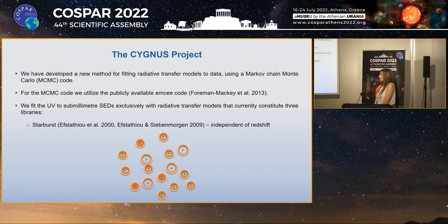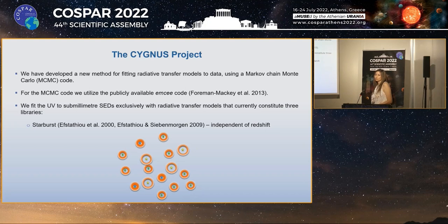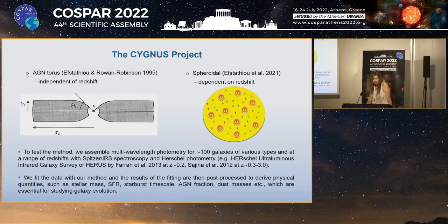Within Cygnus, we have developed a new method for fitting radiative transfer models to data using a Markov Chain Monte Carlo code. The MCMC code we use is emcee, which is a publicly available code developed by Foreman-Mackey et al. in 2013. Some of the main reasons we chose to use emcee are that it is a fast code and it is also easy to parallelize. Our approach is to fit the ultraviolet to sub-millimeter SEDs exclusively with radiative transfer models, and this is one of the novel features of our method. The models currently constitute three libraries: a library of starburst models, a library of AGN torus models, both assumed to be independent of redshift, and a spheroidal model library selected depending on the redshift.